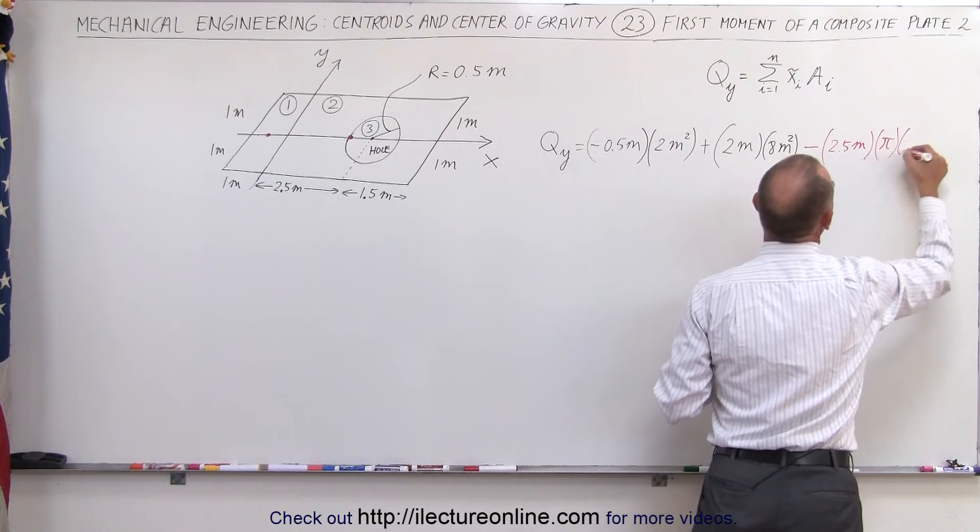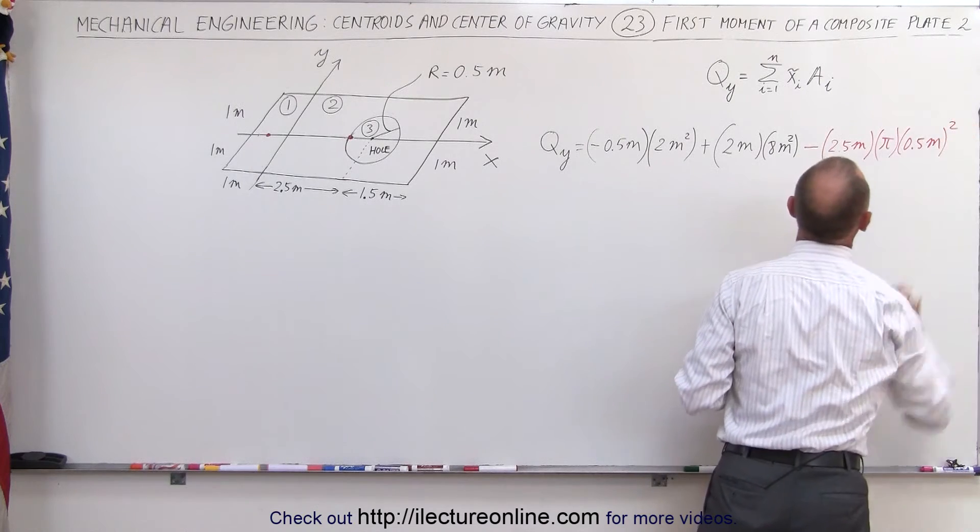The area of the hole would be pi times 0.5 meters. So pi times 0.5 meters, we need to square it, that's the radius squared.